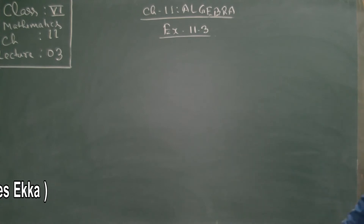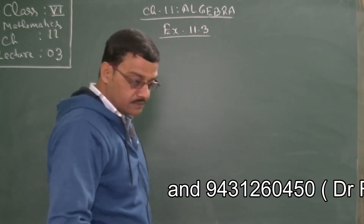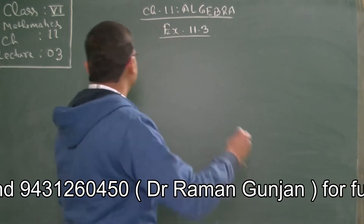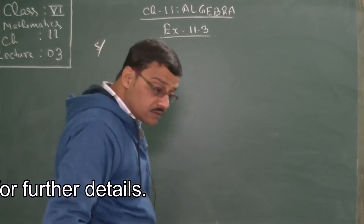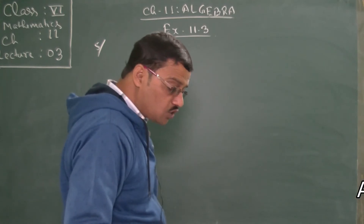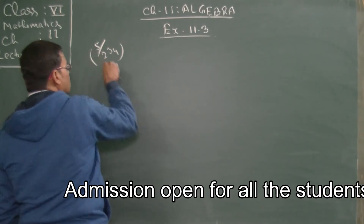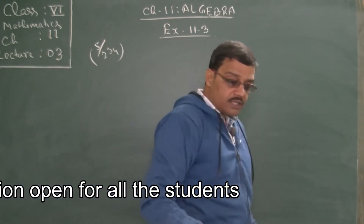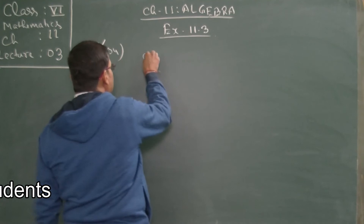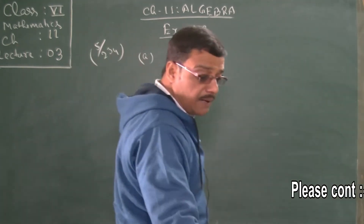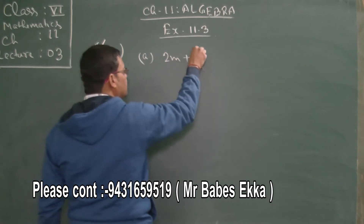Look at sum number 5 on page 234: give expressions in the following cases. For option A: '11 added to 2m' — we can write 2m plus 11, because 11 is added to 2m.